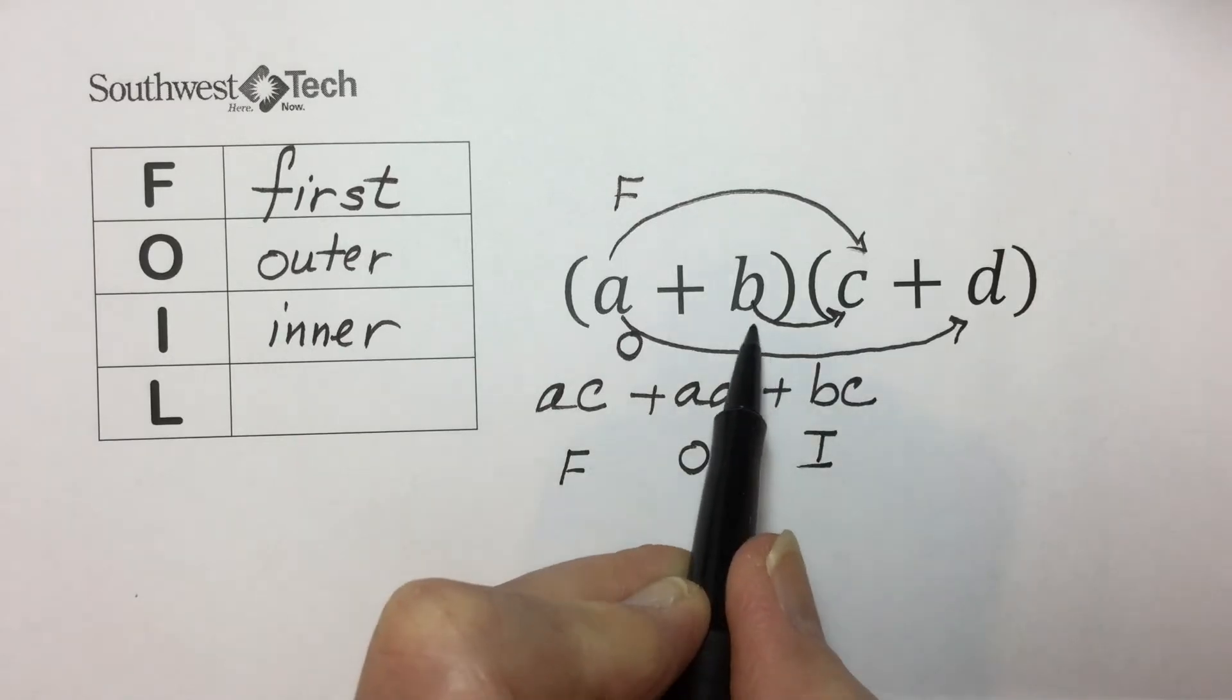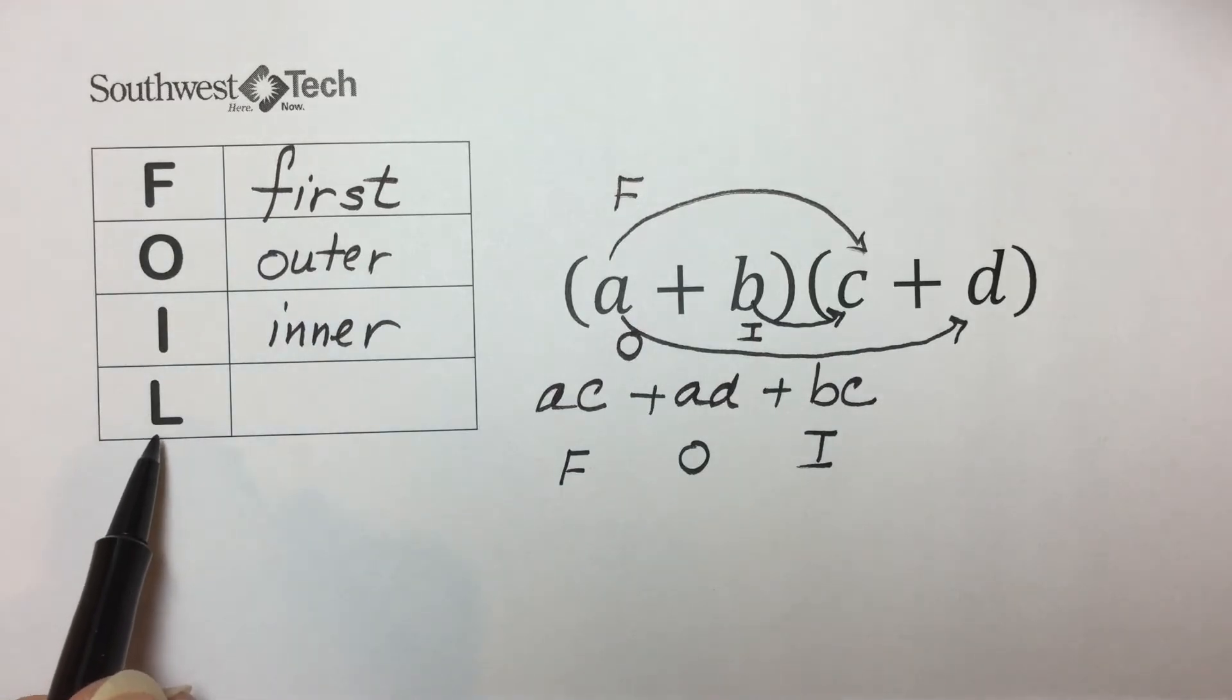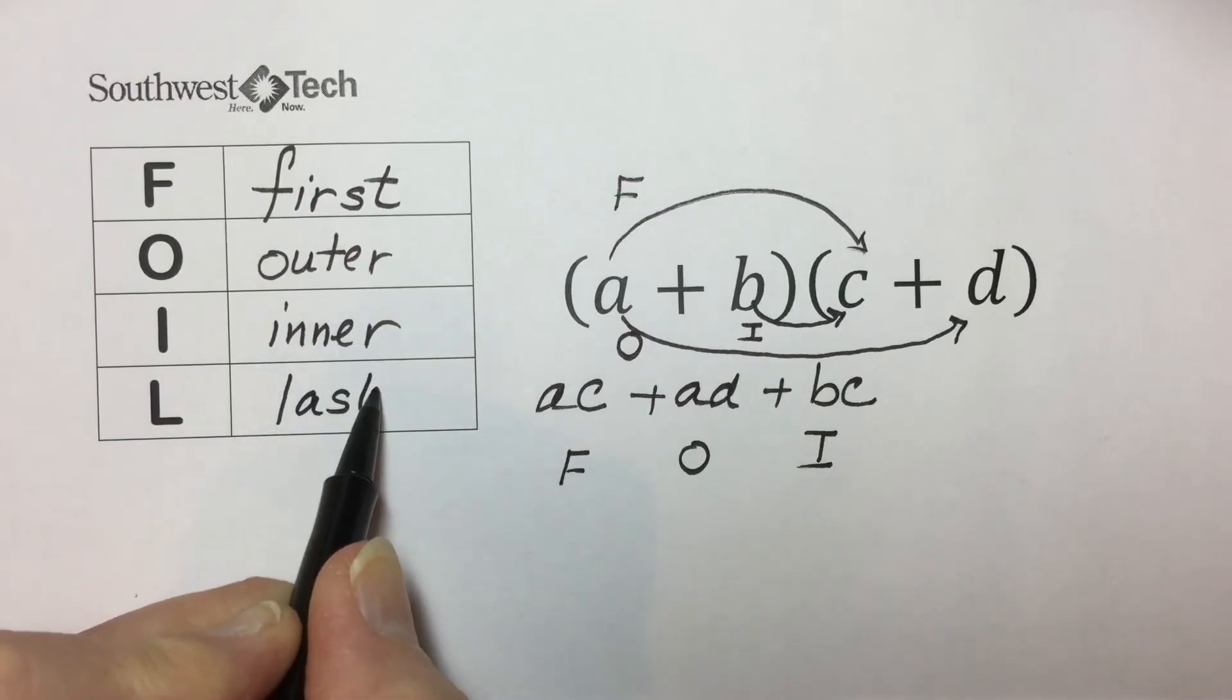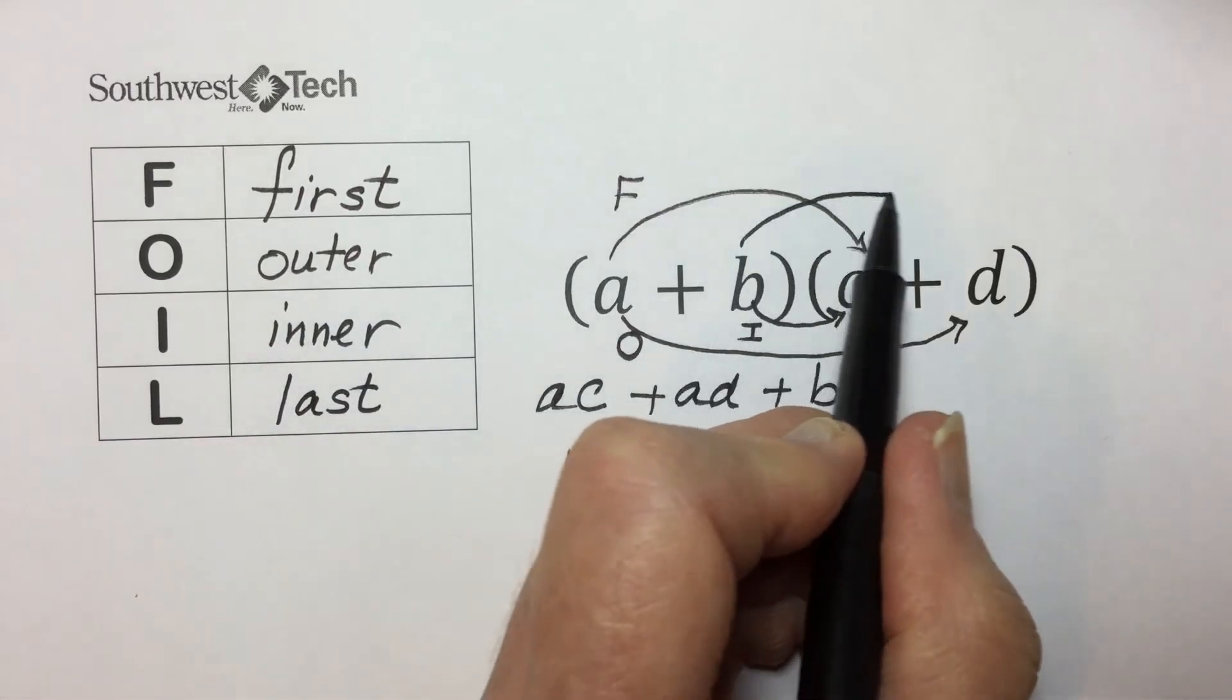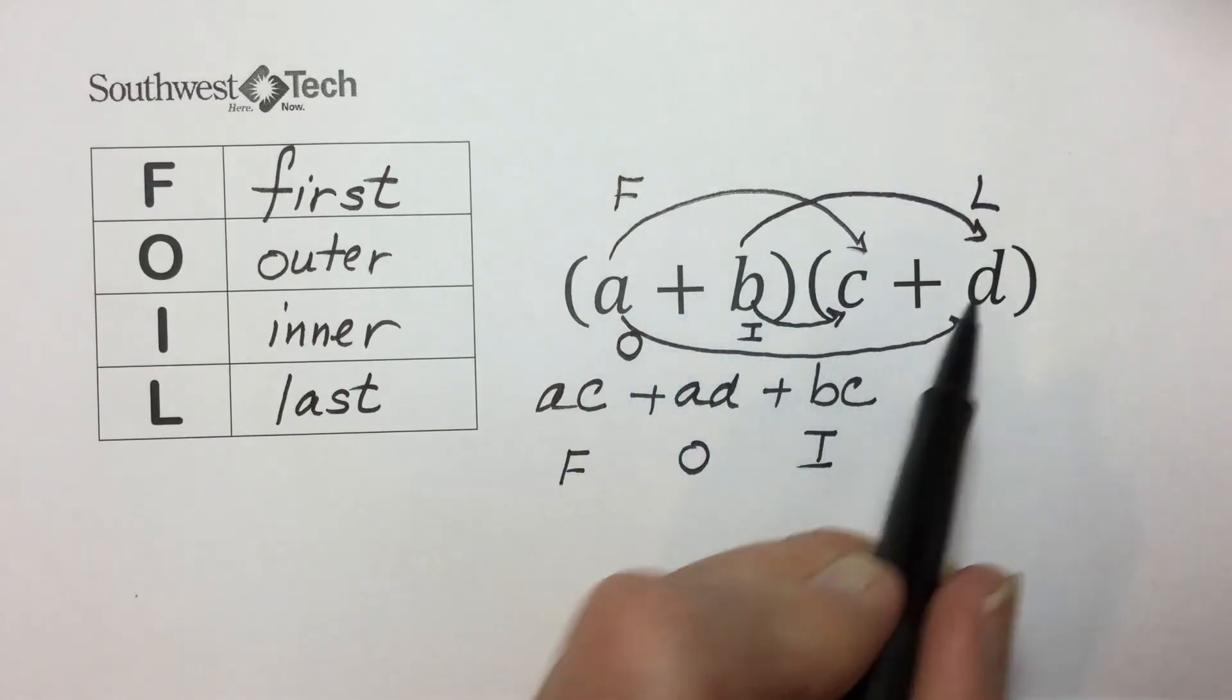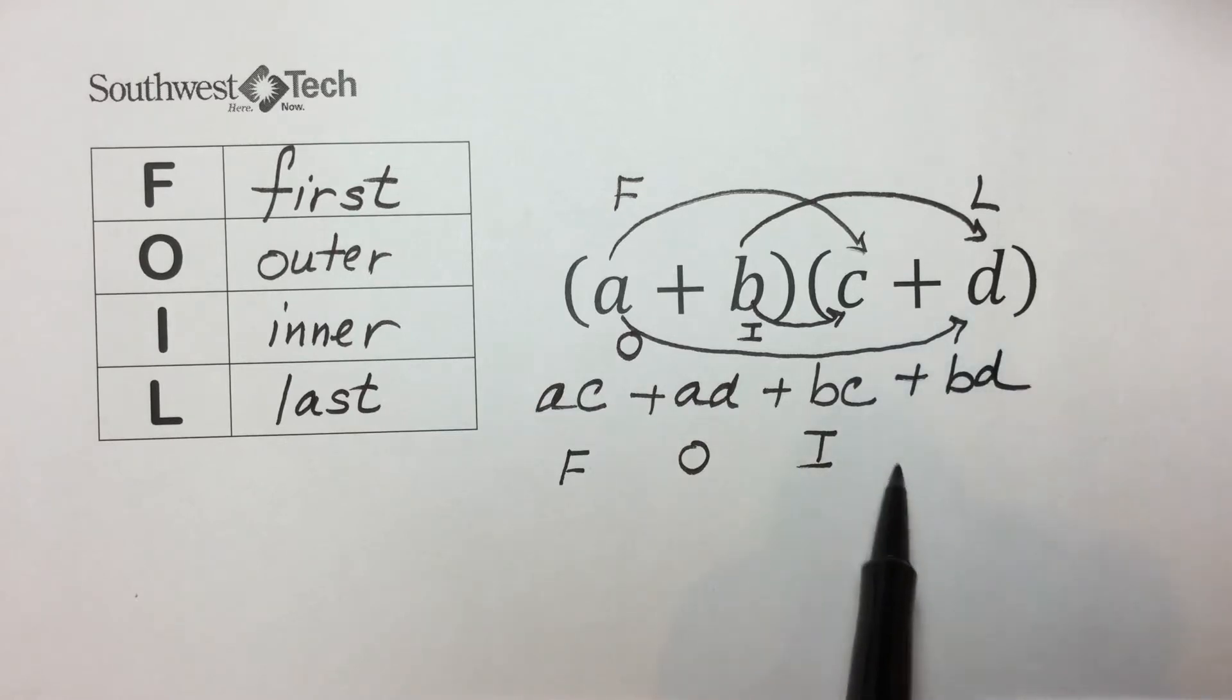And L for the last step in the distribution of these two binomials is for the last terms multiplied together. Multiplying B times D results in BD, the last terms multiplied together.